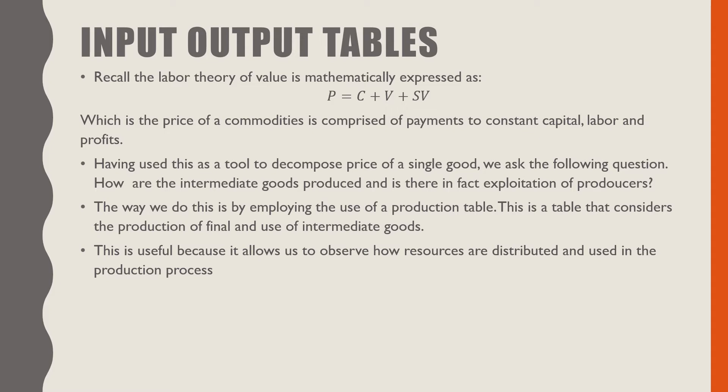Recall that the labor theory of value is mathematically expressed as P equals C plus V plus SV, in which the price of a commodity is comprised of payments to constant capital, labor, and profits. Having used this as a tool to decompose the price of a single good, we ask the following question: How are intermediate goods produced and is there in fact exploitation among producers?